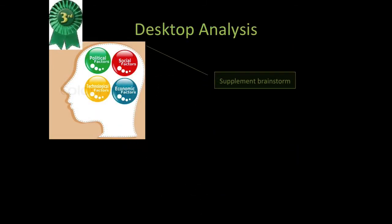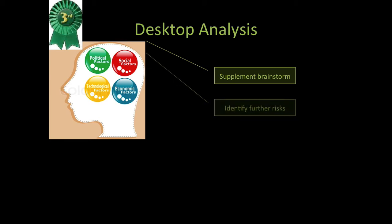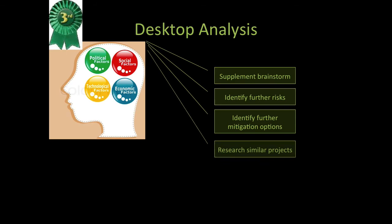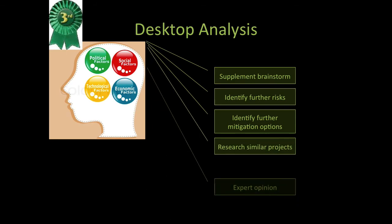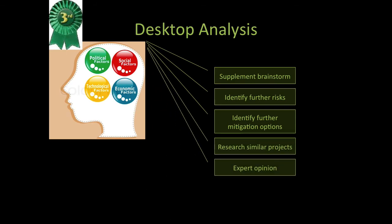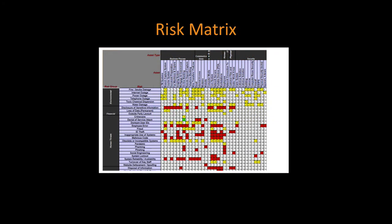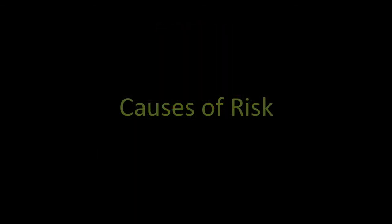They then move on to the desktop analysis, which supplements the brainstorm. It identifies further risks, identifies further mitigation options. You research similar projects and you get some more expert opinion. Then you do the risk register, which looks at the cross-reference to other risks and where there's interdependency. You can see they've got the likelihood and impact, and then they multiply the two together. Or you could do the risk matrix with cross-reference to other risks where there's interdependency.